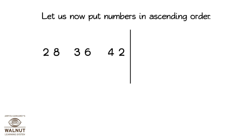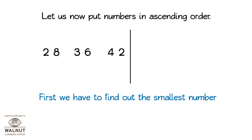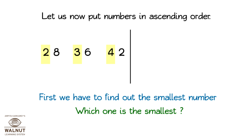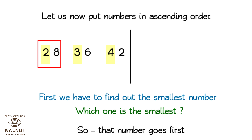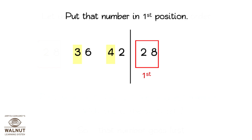Let us now put numbers in ascending order. First, we have to find out the smallest number. Which one is the smallest? 28. So that number goes first. Put that number in first position.